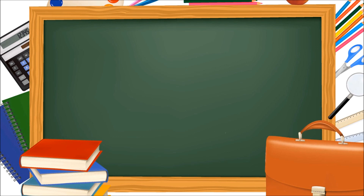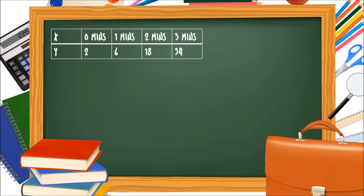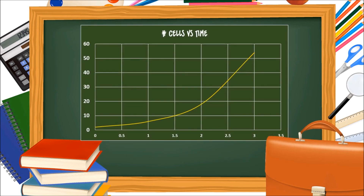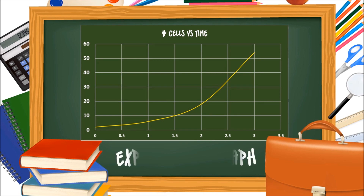Let's now put our data in a table of values, where we'll let x represent minutes, and y represent how many cells we have. If we were to plot a graph, we'll get something like this. A graph of this shape is known as an exponential graph, and so we have an exponential relationship between each of the plots.